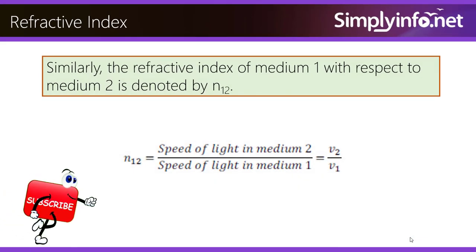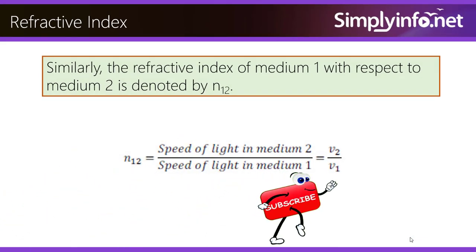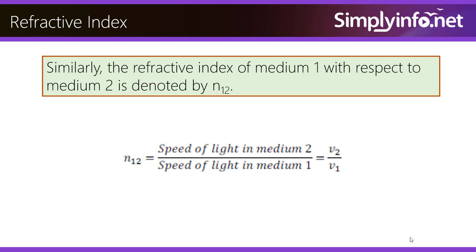Similarly, the refractive index of medium 1 with respect to medium 2 is denoted by N12. So, N12 is equal to the speed of light in medium 2 divided by the speed of light in medium 1, which is equal to V2 / V1.